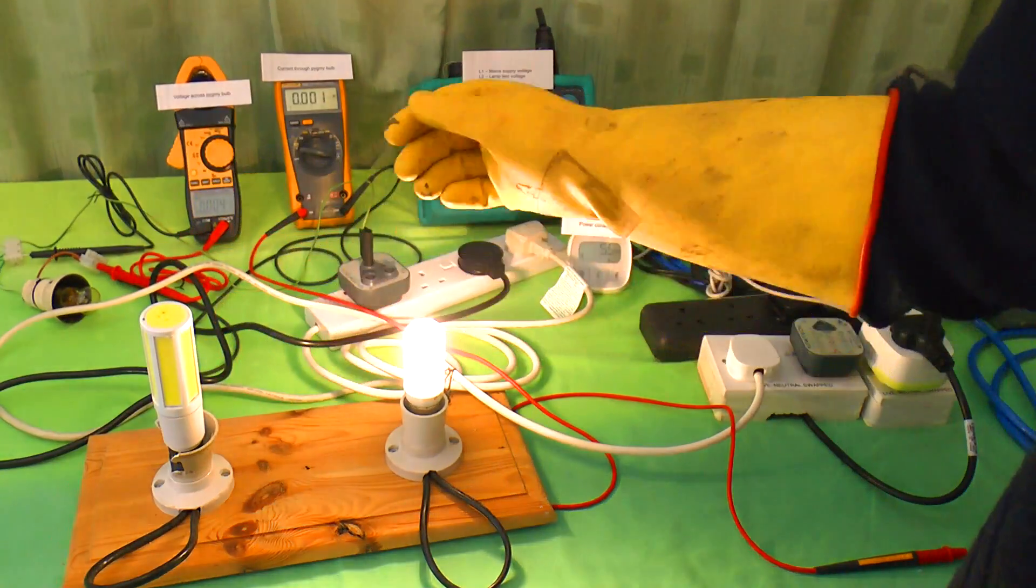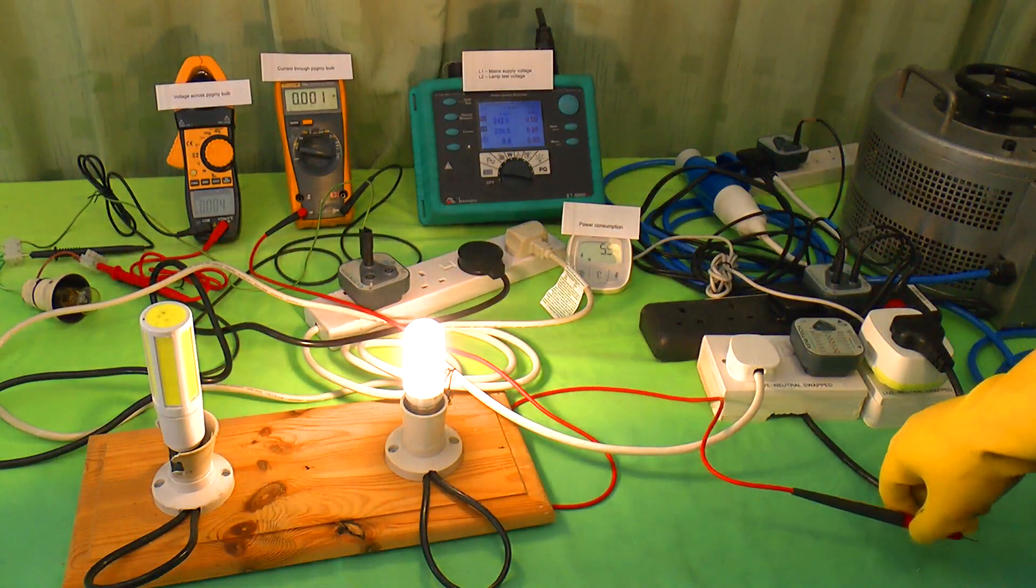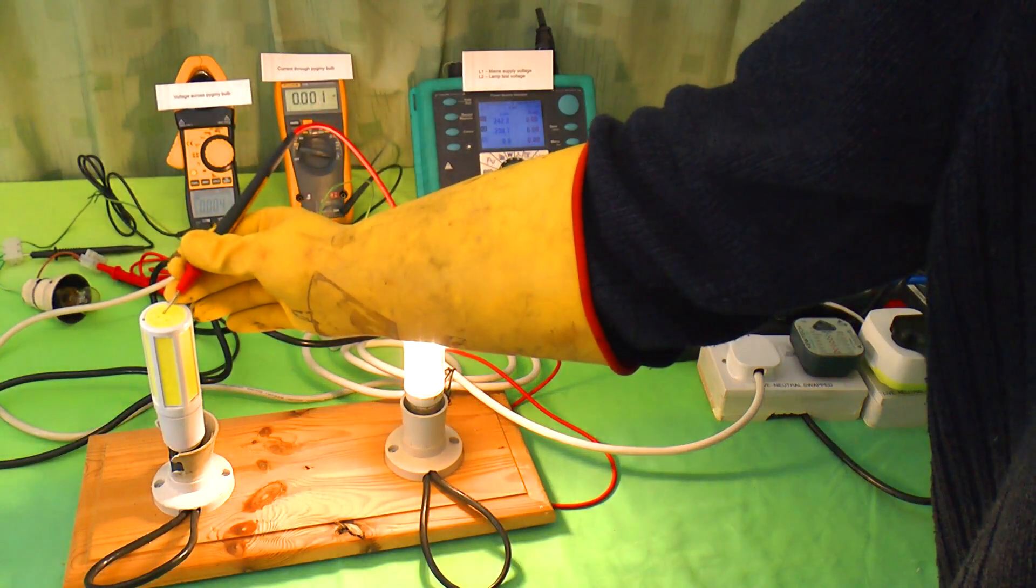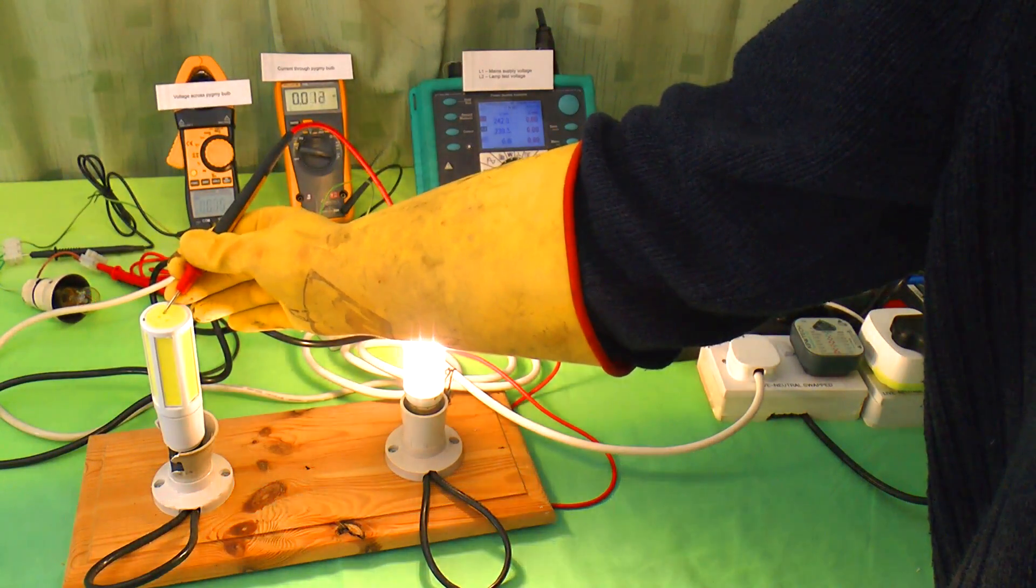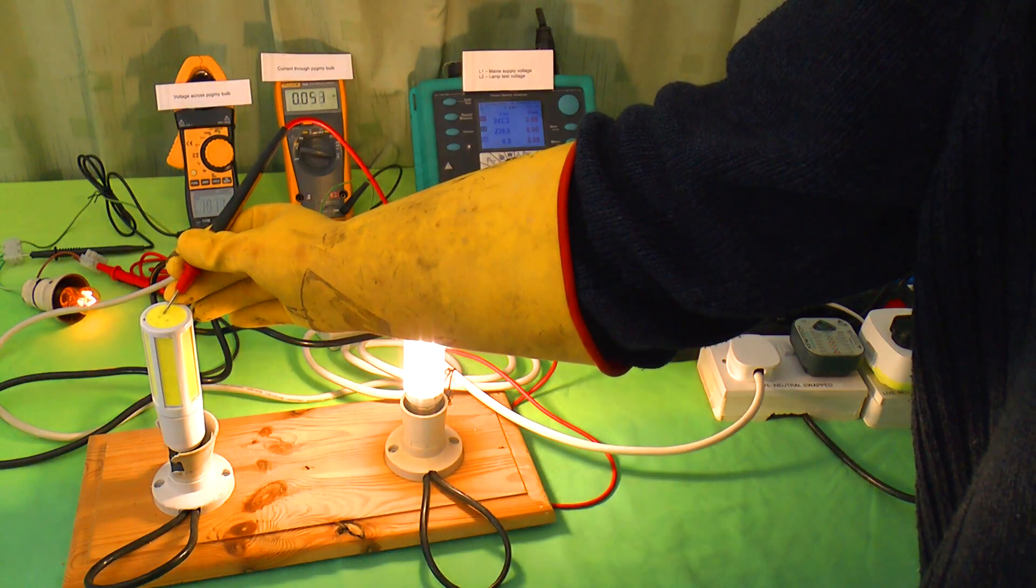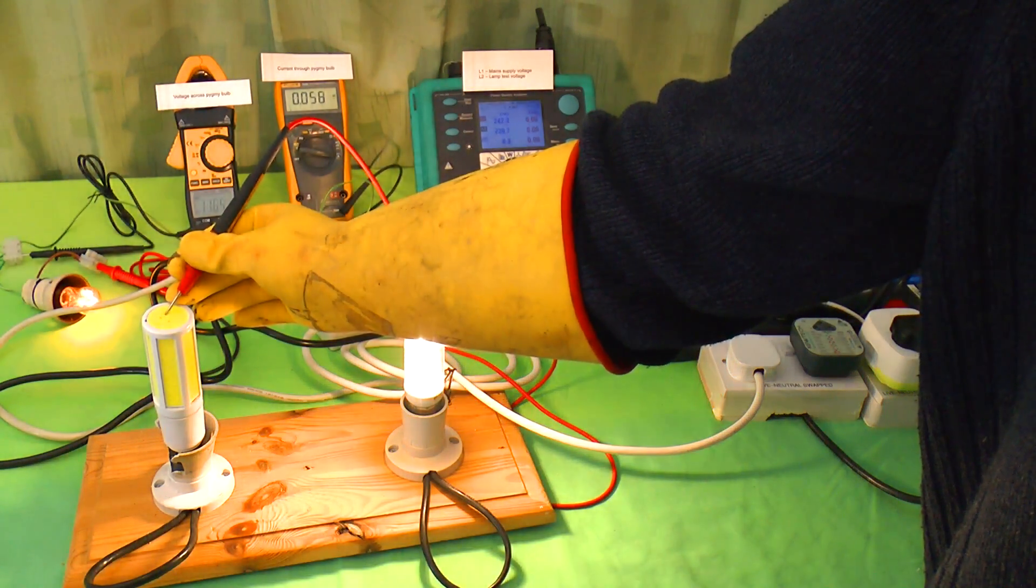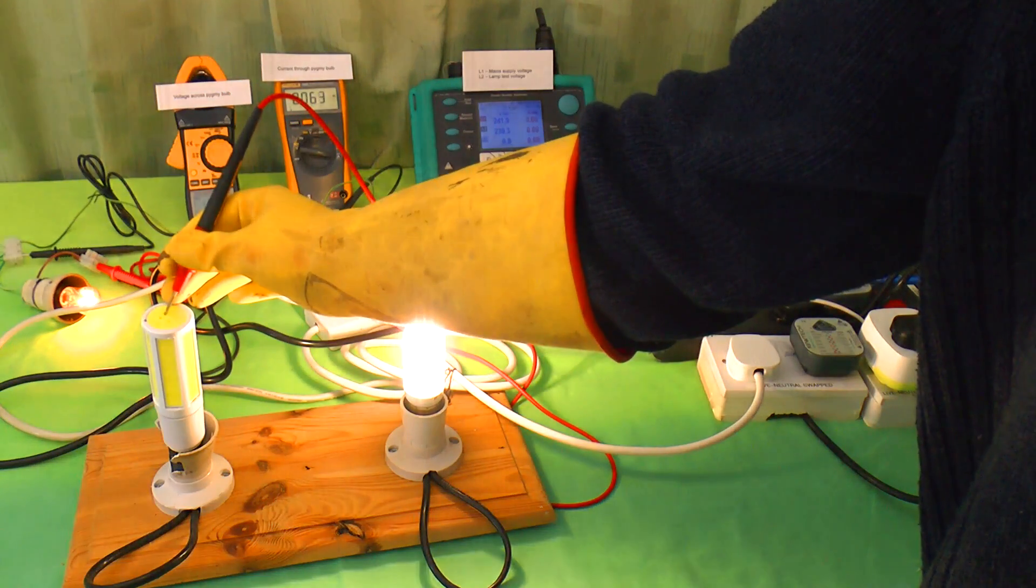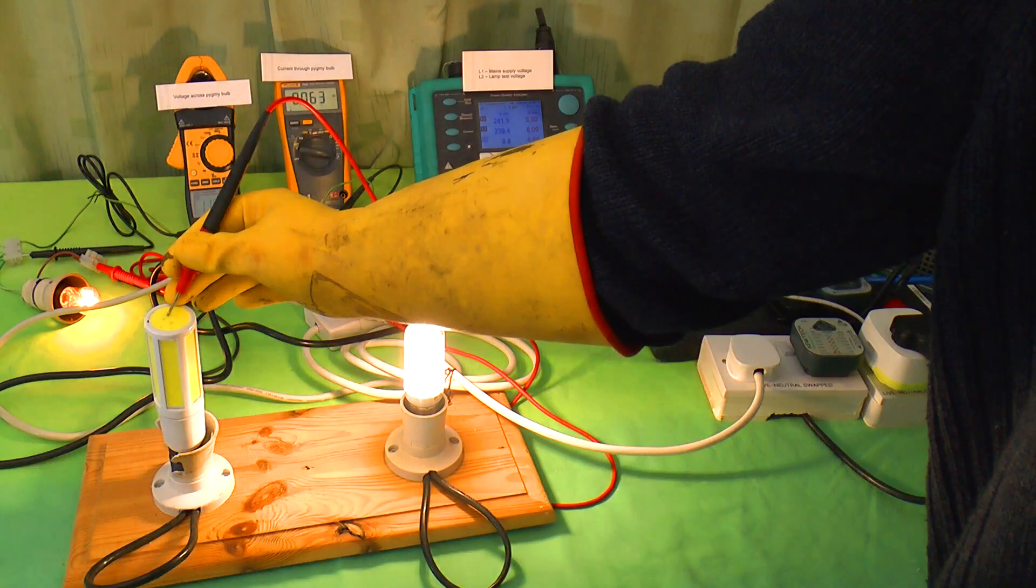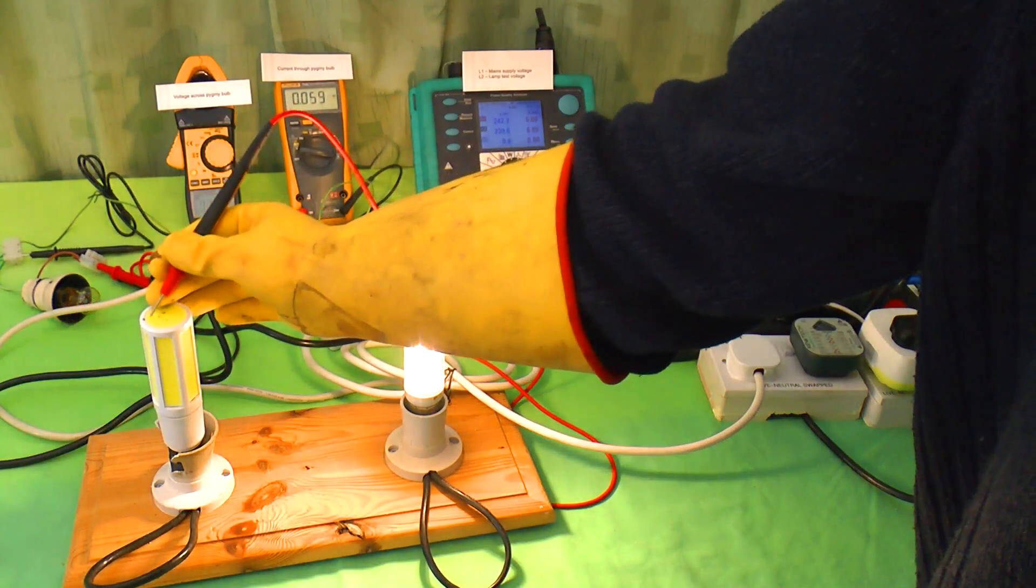However, as you can see, I've already blown the lamp whilst testing it. Because if the gel is pierced, once again, there is significant current available. We're getting 64 milliamps there at 122 volts. Still not as bad as the rest, but still a very nasty shock.